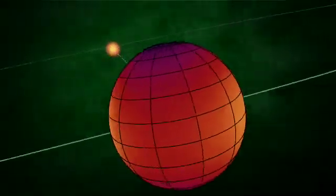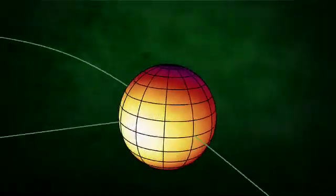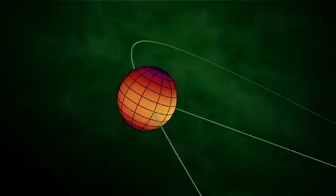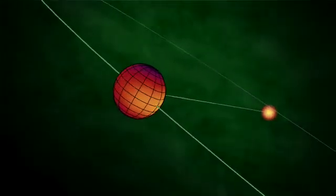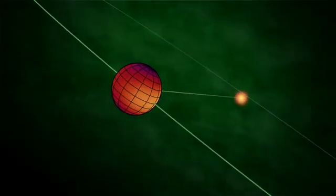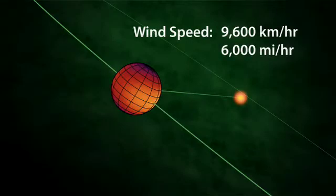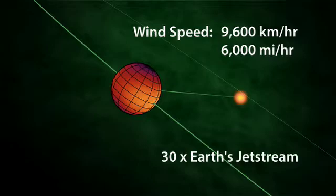The researchers deduce this shift is caused by ferocious winds in the upper atmosphere that sweep the hot clouds around the planet before they can cool off much. The wind speeds could be as high as 9,600 kilometers an hour, or 6,000 miles an hour. That's about 30 times faster than the jet streams in Earth's atmosphere.